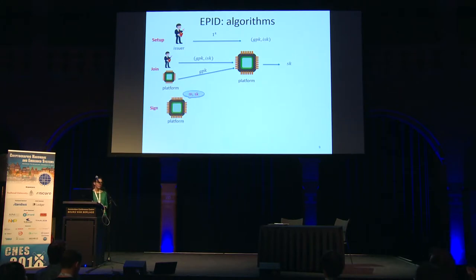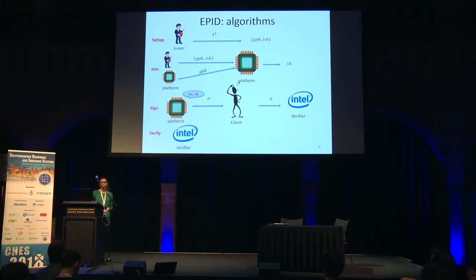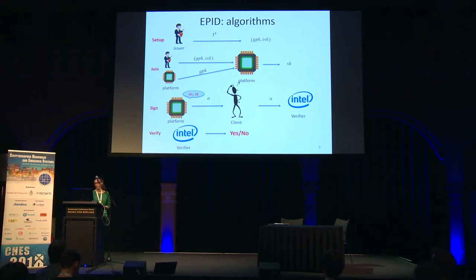If the platform wants to sign a message m using its secret key sk, it produces a signature sent to the client, who sends it to the verifier — Intel in this case. Intel then verifies the signature and tells the client whether it is valid or not.